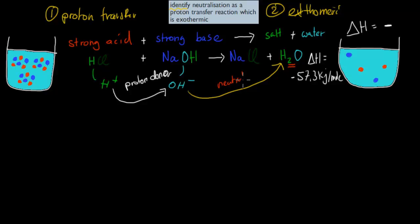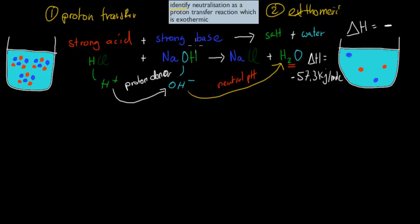And that's what we mean by proton transfer when it comes to neutralization. So strong acid and strong base coming together, making salt and water — that's a neutralization reaction. You can see the proton transfer from the hydrogen of the hydrochloric acid to the hydroxide group of the sodium hydroxide, making water and a salt.